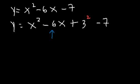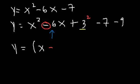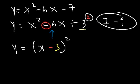Now because I added 9 to the right side, I need to either add 9 to the left side or subtract 9 from the right side in order for the right side to maintain the same value. Now let's factor x squared minus 6x plus 3 squared. It's going to be x minus 3, squared. That's the quick and simple way to factor it. Then combine the remaining terms: negative 7 minus 9 is negative 16.